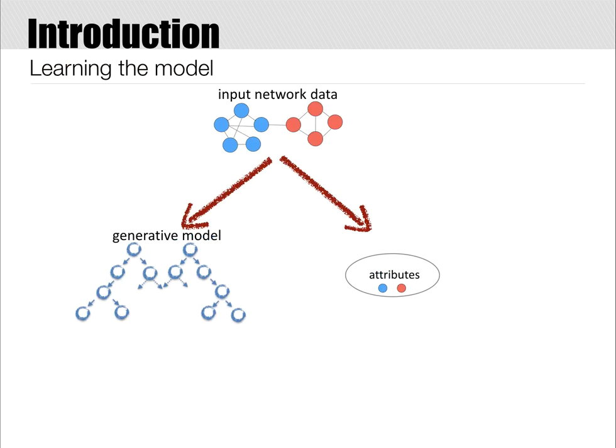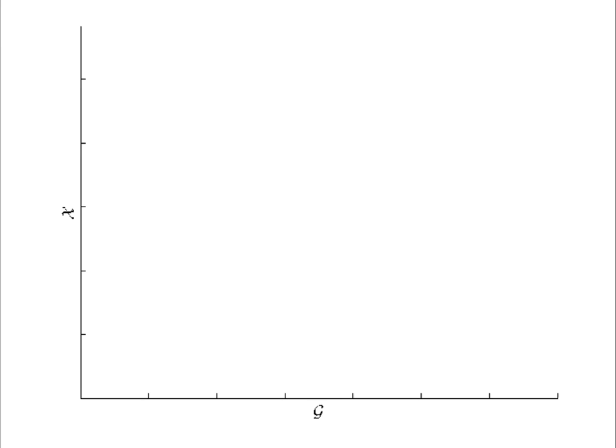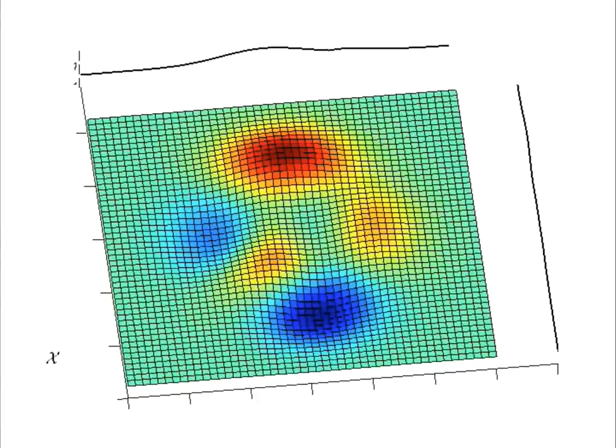In order to sample, we are exploring a network model, but we have to combine it with attributes. More precisely, given network data, we can fit a distribution to the attributes and a generative model to the structure. These are marginals corresponding to the distribution of graphs, represented in the horizontal axis, and the distribution of attributes in the vertical axis. Our task is to perform sampling from this joint distribution.